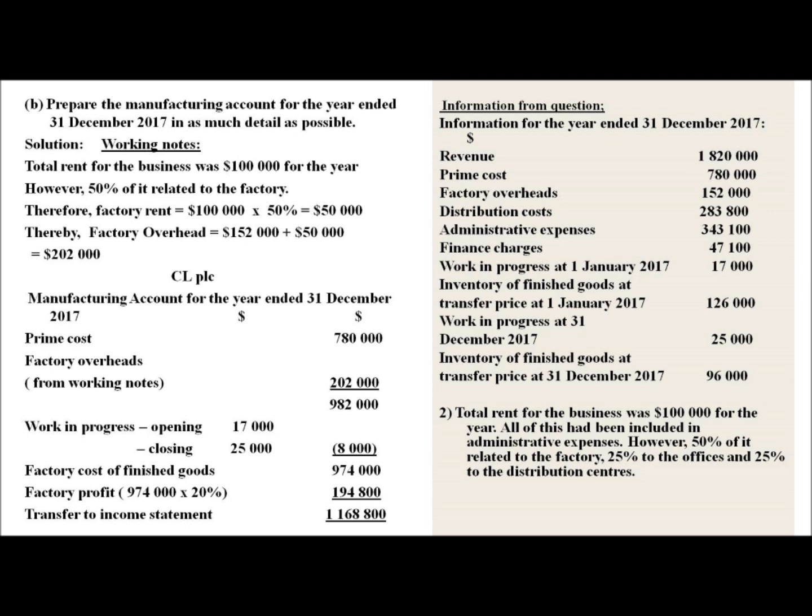Subtracting the net work in progress adjustment from the total of $982,000 gives the factory cost of finished goods as $974,000. We then find the factory profit by multiplying $974,000 by 20%. Adding the factory cost of finished goods and the factory profit together gives the value to be transferred to the income statement.